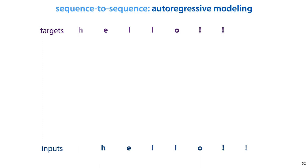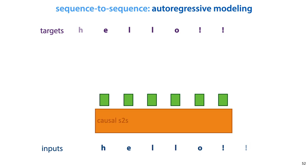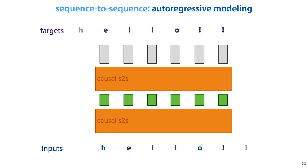We feed the model some sequence, and we set the target as the same sequence, but shifted one token to the left. We then feed the input through several causal layers, ensuring that the network can only look backwards in the sequence.